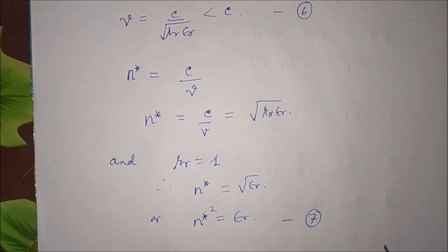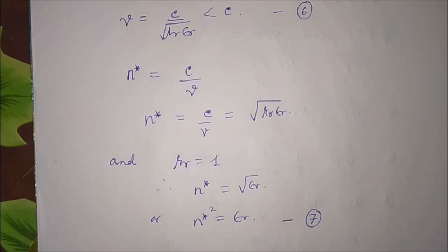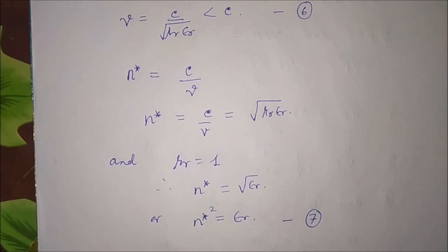For water, mu_r is approximately 1 and epsilon_r is approximately 81, so the refractive index n* should be 9. But the known index of refraction of water for light is 4/3, i.e., 1.33. The resolution is that epsilon_r and mu_r are not truly constant but have a strong dependence on frequency due to dispersion.